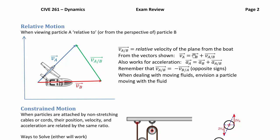We have an equation for this: either use the difference of the two absolute velocities, or use the relative velocity term directly. Whatever's on the left side of the slash in the relative notation corresponds to what's on the left side of the equal sign — so velocity of a equals velocity of b plus velocity of a-slash-b, always in that order. If you flip the order, you must flip the two terms on either side of the equation.